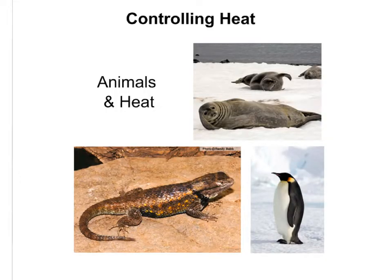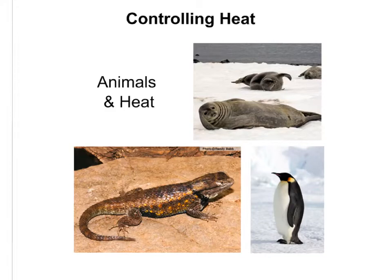Now that you know three ways thermal energy can be transferred, let's look at how heat transfer can be controlled. You do this all the time — wearing a sweater when it's cold, or using an oven mitt so thermal energy isn't transferred from a hot pan into your hand. Animals do the same: a seal's thick blubber keeps thermal energy inside its body.